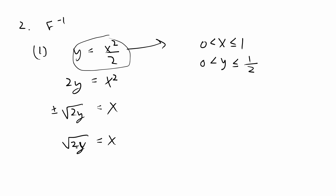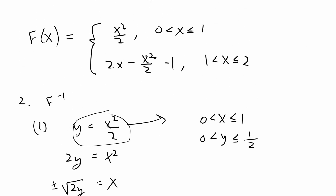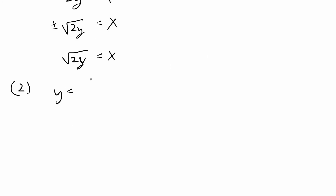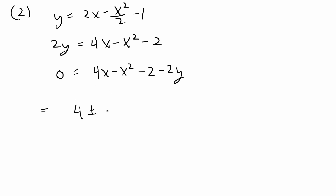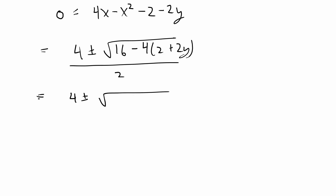Now I find the inverse for the second part. Setting y equal to 2x minus x squared over 2 minus 1 and solving for x: multiplying through gives 2y equals 4x minus x squared minus 2. Rearranging as a quadratic and applying the quadratic formula gives x equals 4 plus or minus the square root of 16 minus 4(2 plus 2y), all divided by 2, which simplifies to 4 plus or minus the square root of 8 minus 8y, divided by 2.